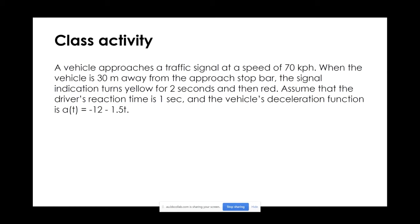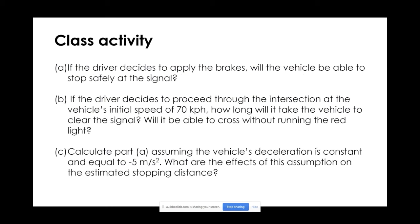Imagine a vehicle approaches a traffic signal at a speed of 70 kilometers per hour. The vehicle is 30 meters away from the approach stop bar. The signal indication turns yellow for two seconds, and then turns to red. The driver's reaction time is one second, and the vehicle's deceleration function is given as: acceleration equals minus 12 minus 1.5T. The problem asks: if the driver decides to apply the brakes, will the vehicle be able to stop safely at the signal?